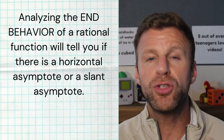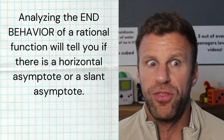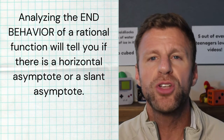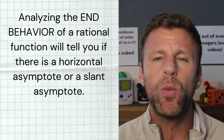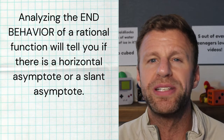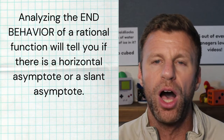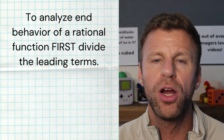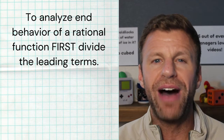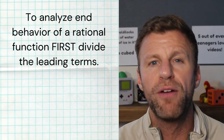To find a slant asymptote, we first have to make sure that there is a slant asymptote. So how do we do that? Well, remember we have to consider end behavior, and all we have to do is divide the leading terms of our rational function. And when we divide those leading terms, one of three things is going to happen.